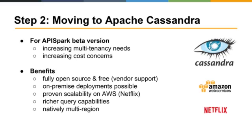As we moved to the beta version of API Spark, we decided to move to Apache Cassandra. It was much better for multi-tenancy needs and cost-effective as open source. We knew we could get commercial support from DataStax when moving to production. The ability to deploy on-premise for key partners was becoming important, and we knew it would scale on AWS. We got positive benchmarks from Netflix, got richer query capabilities through CQL, and gained native multi-region replication capabilities.